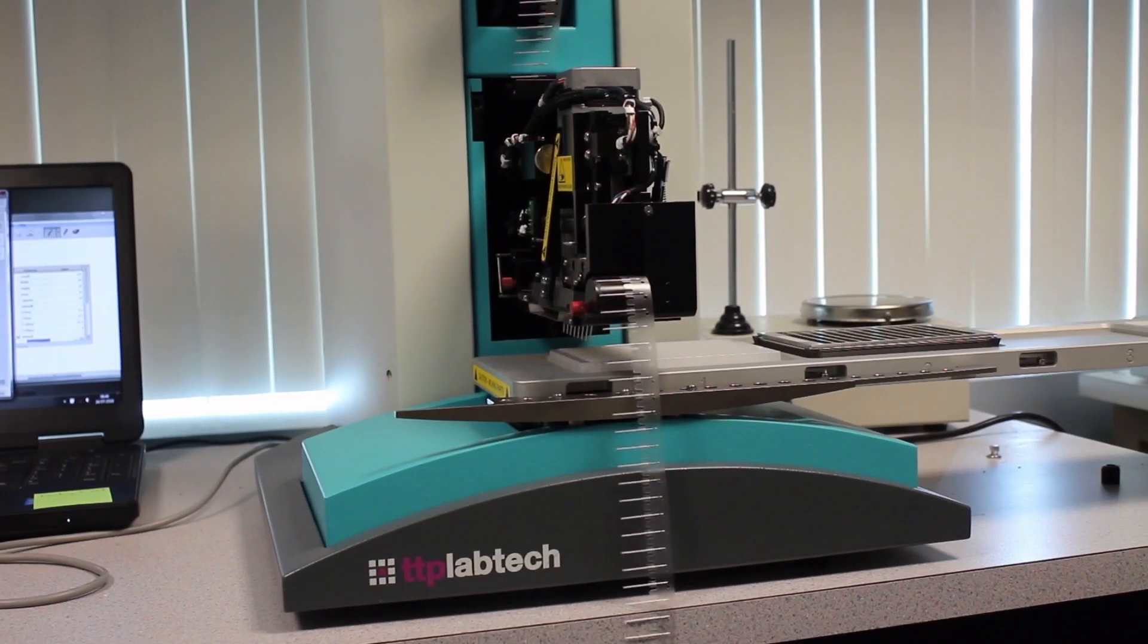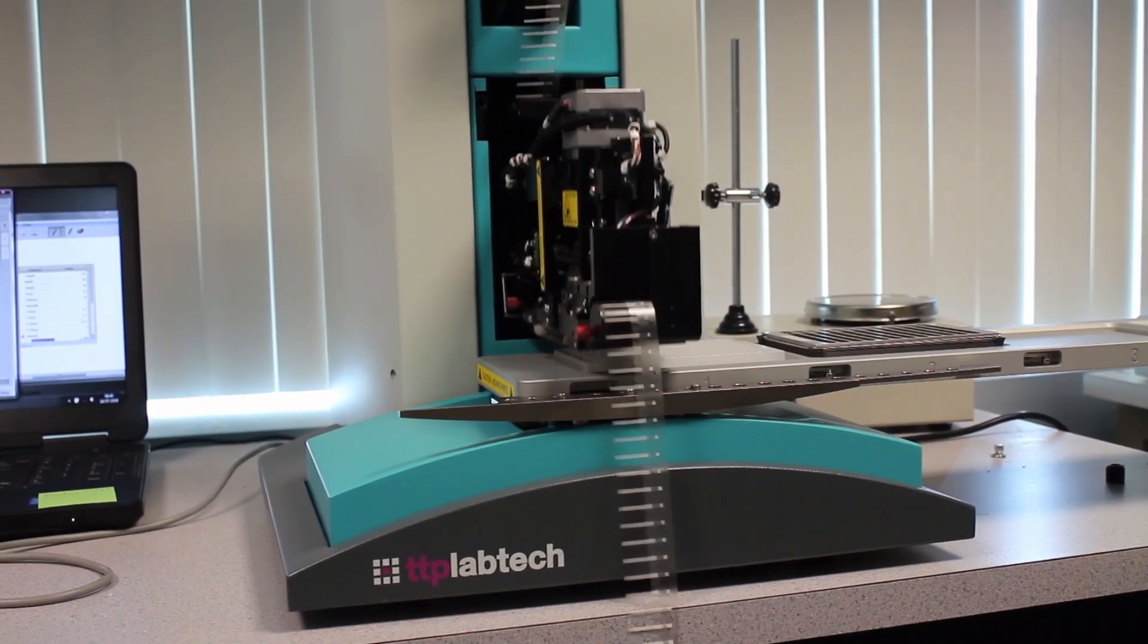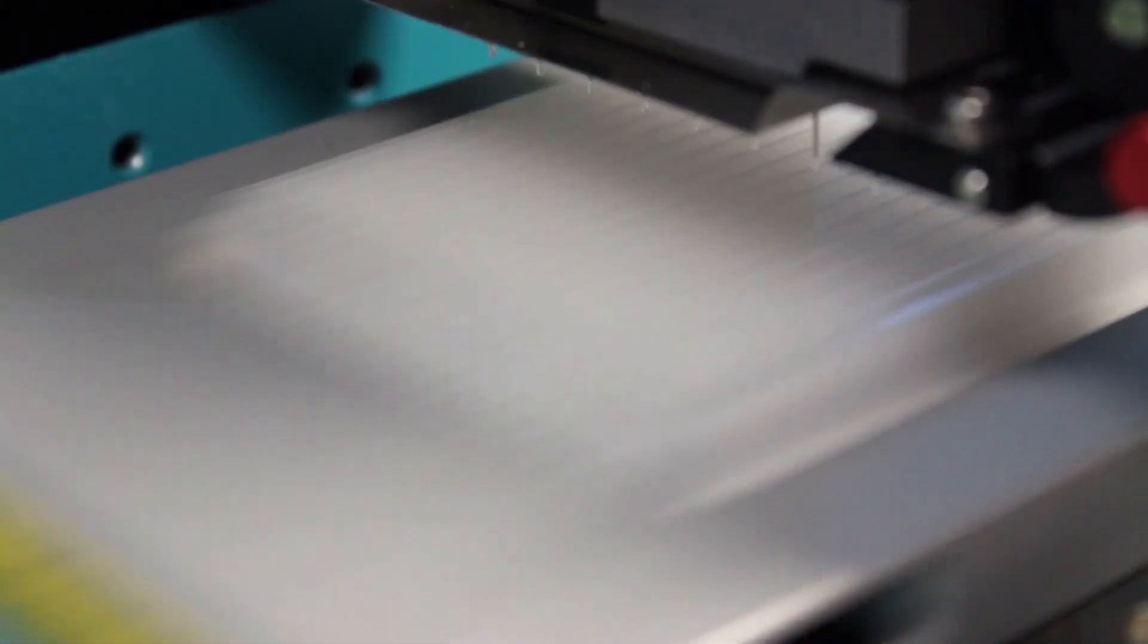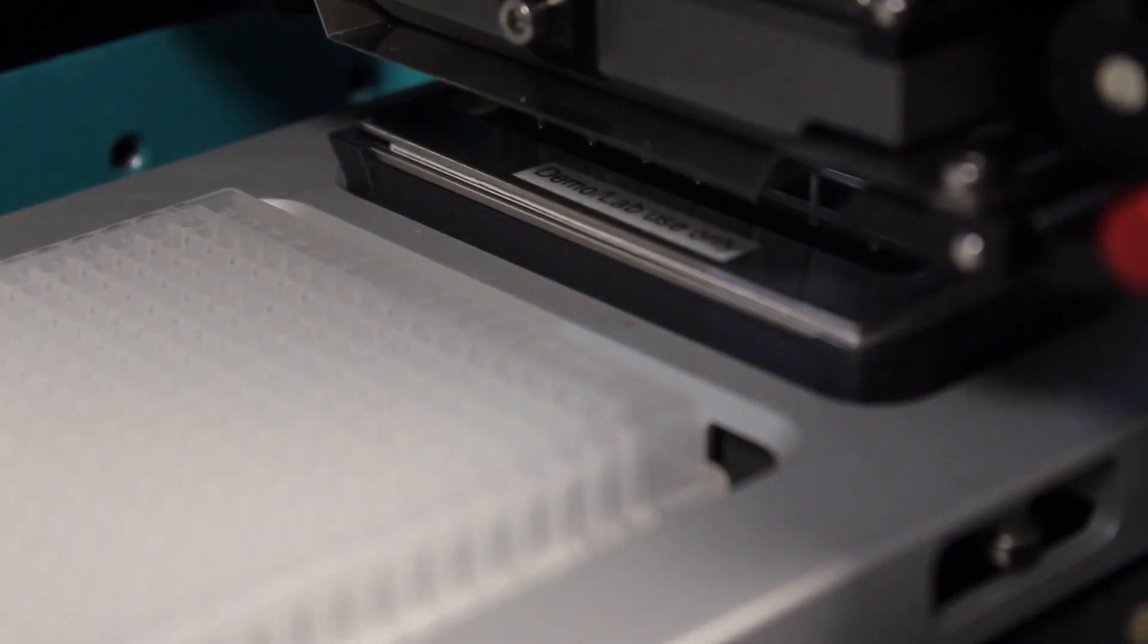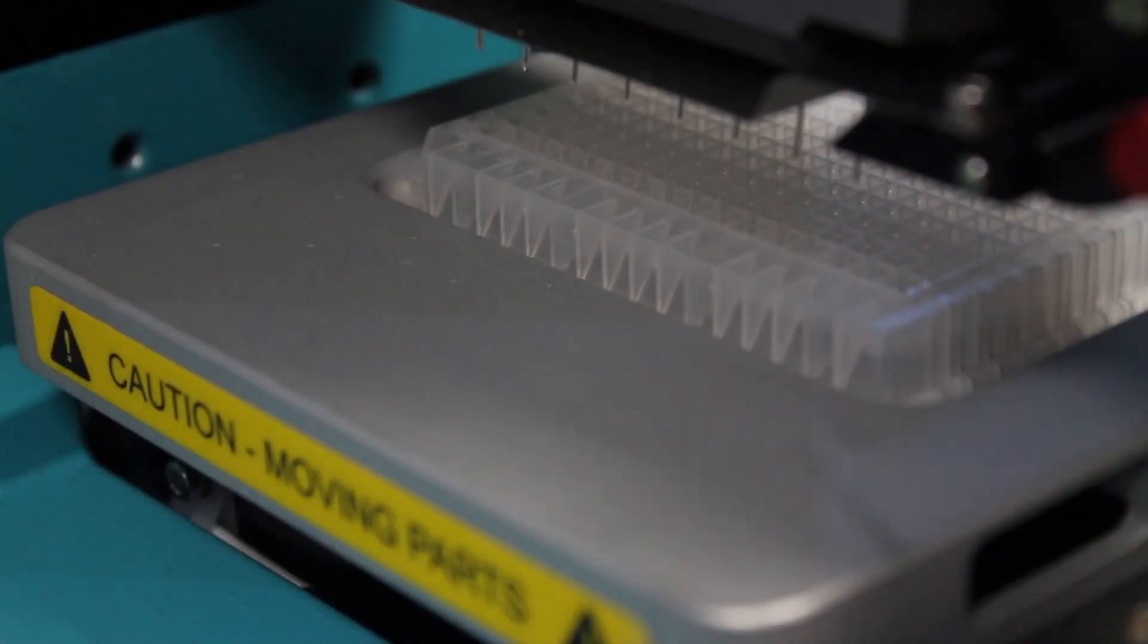Starting from either a 96 or a 384 well plate, you can use an automatic pipettor such as the SPT LabTech Mosquito to spot nanoliter amounts of sample from well plates onto our Quickstrip HT wire mesh screen.